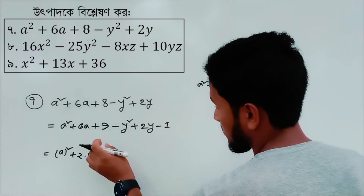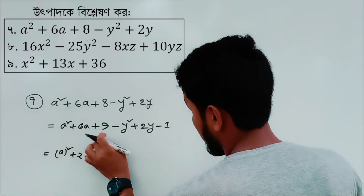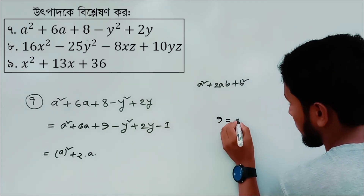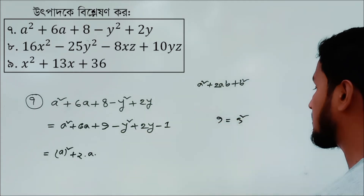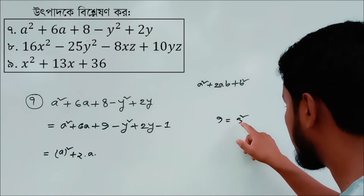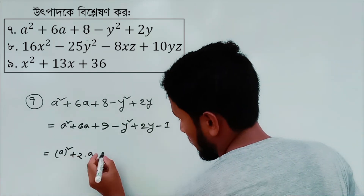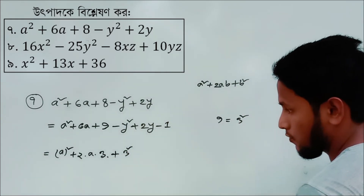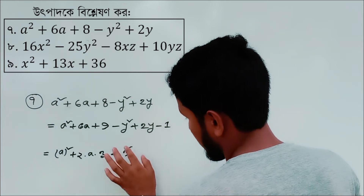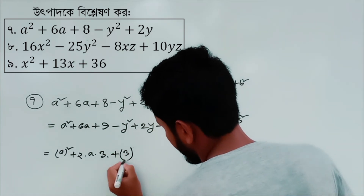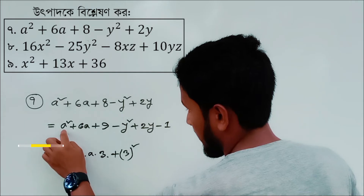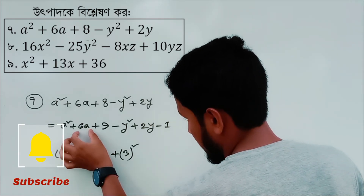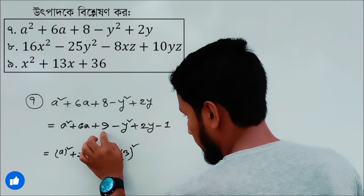Continuing through the values: 2, 3, 4, 5, 6, 7, 8, 9. Equal to 9.